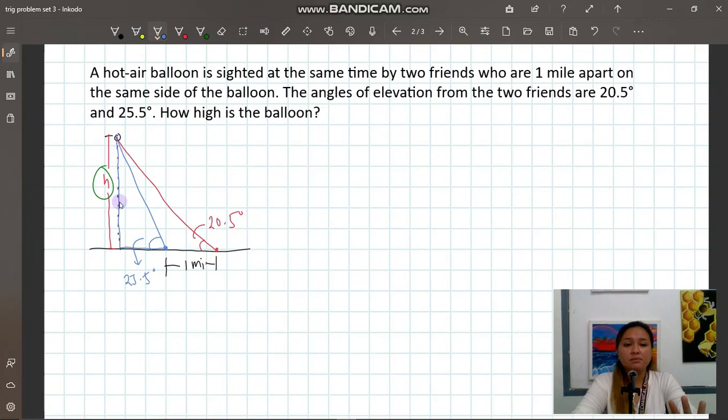This blue triangle - we can say that this is a right triangle. Because basically, we are assuming that this vertical height is where the balloon is, and then our ground is horizontal, so they're perpendicular, 90 degrees. We can say this is a right triangle, and we can use SOHCAHTOA to solve for H. We have the angle 25.5.